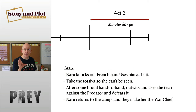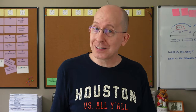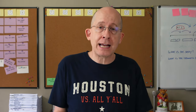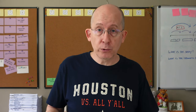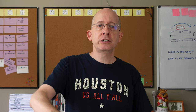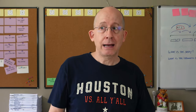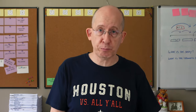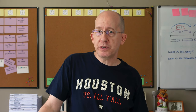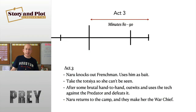Act Three in this movie is incredibly short — just 10 minutes. That's like a 1950s Act Three, a very old-fashioned length, and I'm delighted to see it. I feel like Act Threes are way too long these days. What really works here is we don't need more — I had no idea Act Three was so short until I broke down the structure. We want to see these two battle it out; they do so quite effectively. Naru knocks out the Frenchman, uses him as bait, takes the Tutsia so she can't be seen, has brutal hand-to-hand combat with the Predator, defeats it, returns to camp, and becomes the tribe's new war chief.